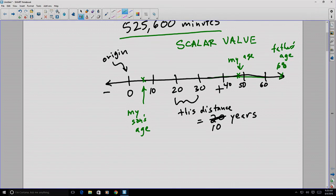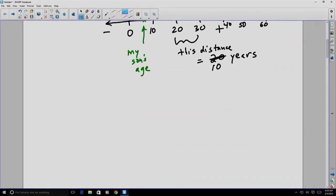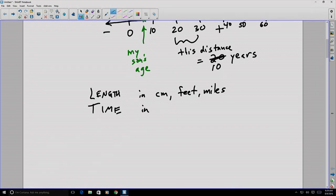Different units may represent the same measurable quantities. For example, length might be measured in centimeters, or feet, or miles. Time might be measured in seconds, or days, or decades.